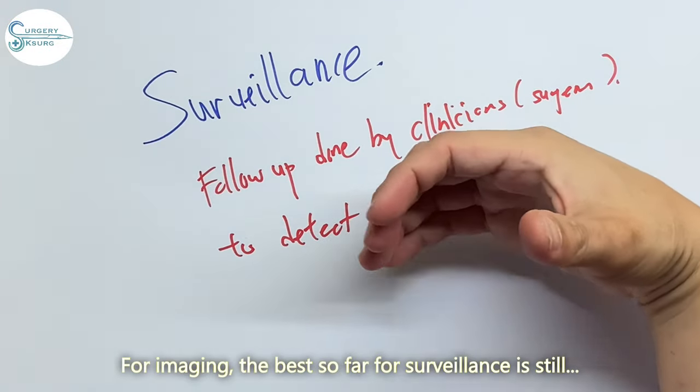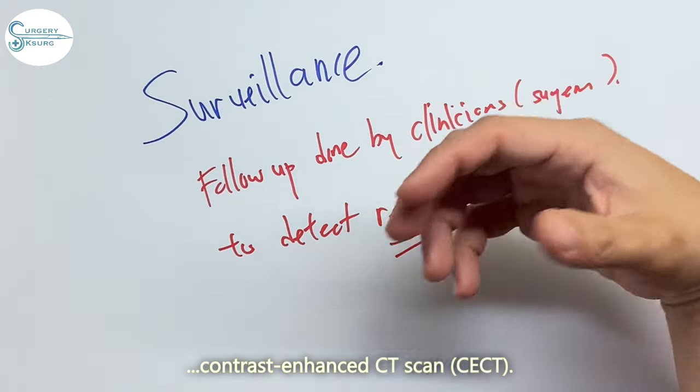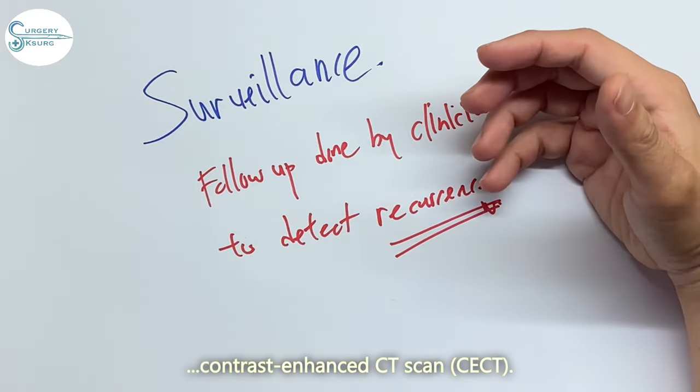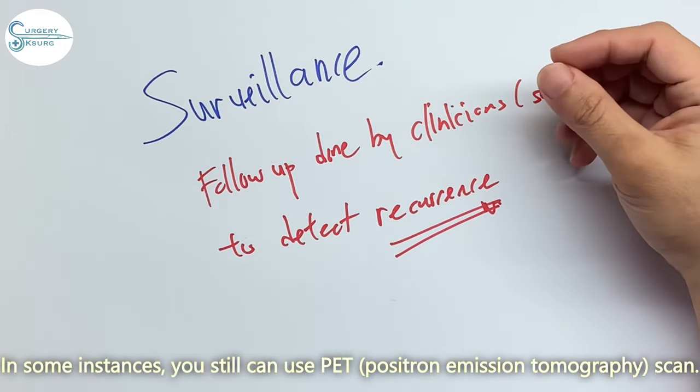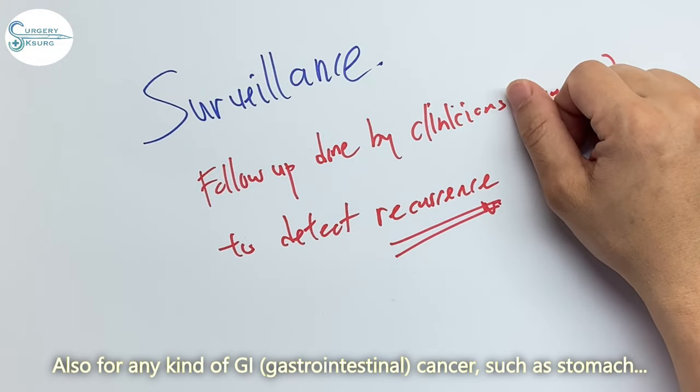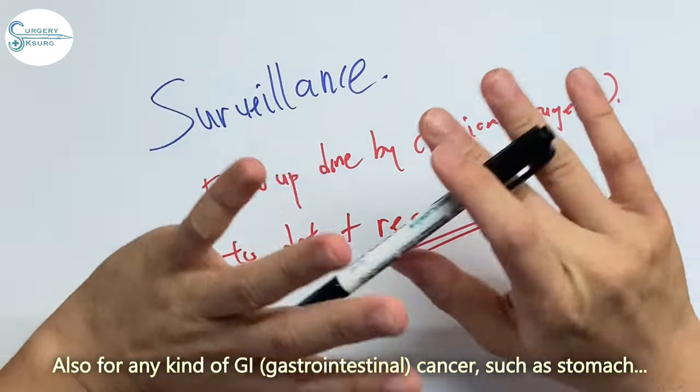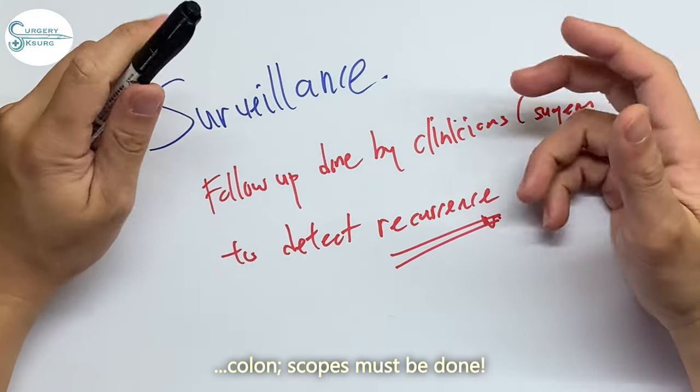For imaging, the best so far for surveillance is still a contrast enhanced CT scan. In some instances, you can still use a PET scan to detect any recurrence as well. Also, for any kind of GI cancer such as stomach, colon, scopes must be done.